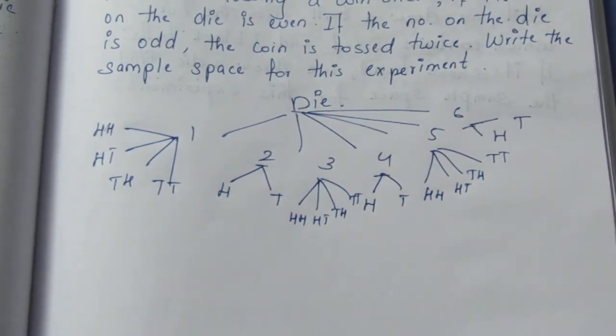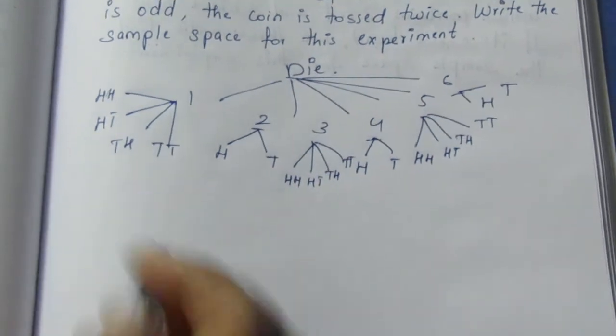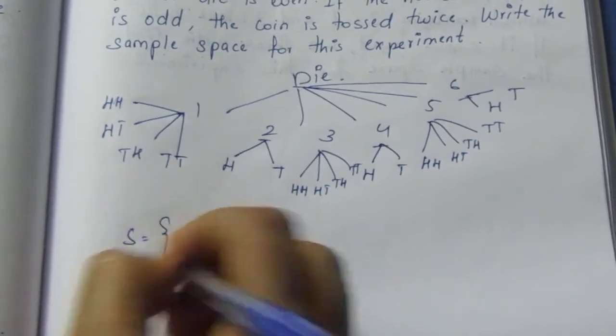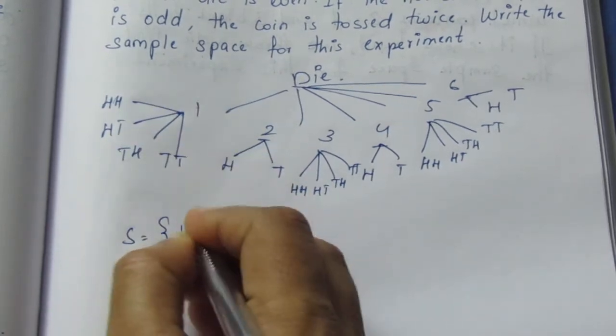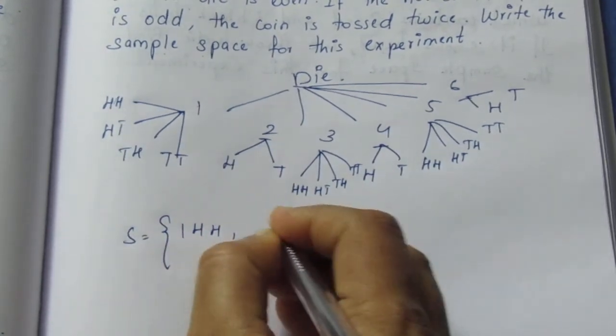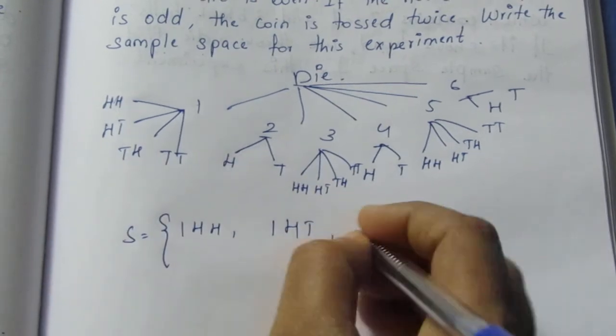So if we take the sample space, S is equal to 1HH, 1HT. You can see, all of them are added. That's the sample space.